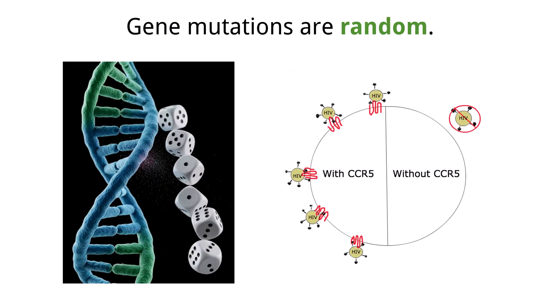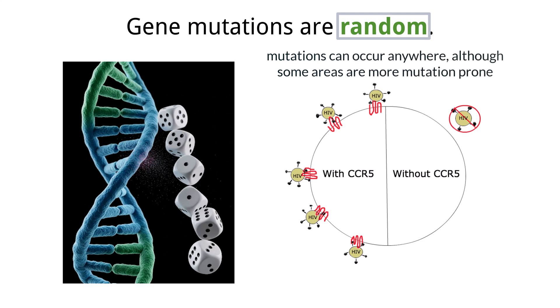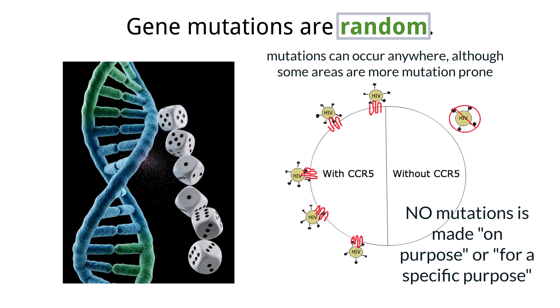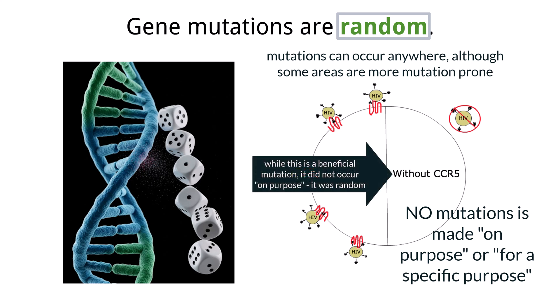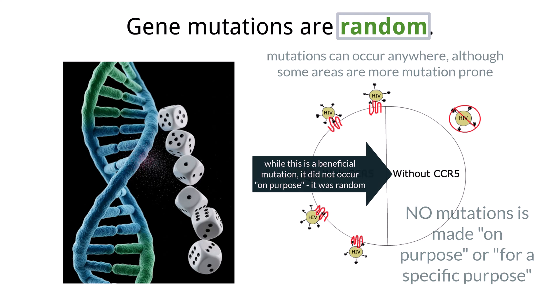It is important to remember that mutations are random. They can occur anywhere in the genome, although some areas are more prone to change. Importantly, there is no natural mechanism to cause a mutation to change a specific trait on purpose. The CCR5 delta 32 mutation did not occur purposefully to help humans evade HIV — it occurred randomly and just happened to be beneficial. Most mutations are neutral or harmful, but a few are beneficial. This randomness explains why evolution is often slow and gradual.